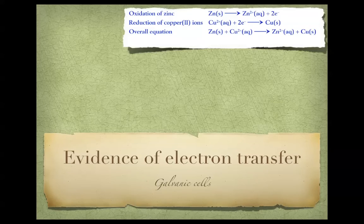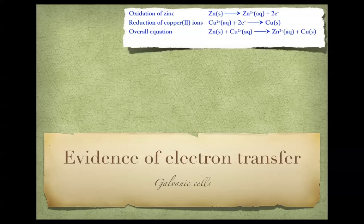Now this looks at the evidence of electron transfer. What we've covered so far is redox equations, which deal with the donation of electrons. We looked at oxidation and reduction, where oxidation was the addition of oxygen. We changed that a bit and said it's not just oxygen — really it's the donation of electrons, where oxidation is the loss of electrons and reduction is the gaining of electrons.